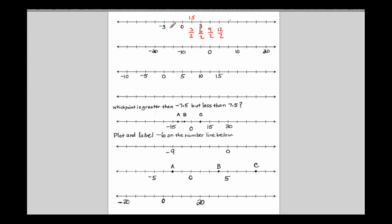That means on the negative side, this would be negative 3 halves. On the negative side, it simply means the opposite of whatever the positive side is. So this is the opposite of 3 halves right here. This is the opposite of 3. The opposite of 9 halves would be negative 9 halves. The opposite of 12 halves would be negative 12 halves. And I can keep on going forever in that direction and forever in that direction.